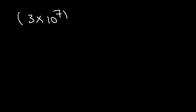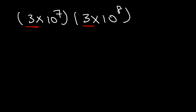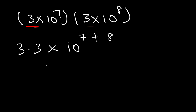Now it's your turn. Feel free to pause the video and try this example. Multiply 3 times 10 to the 7 by 3 times 10 to the 8. Let's start by multiplying 3 by 3 and then add the exponents — 7 plus 8. So 3 times 3 is 9, and 7 plus 8 is 15. And that's all you need to do.